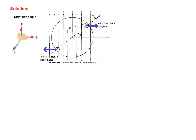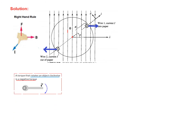An important point: if the torque rotates an object clockwise, the torque is negative. Looking at the force directions, one side is being pulled one way and the other side the other way, meaning the rotor rotates clockwise. Therefore our torque will be negative — keep that in mind for the next step.